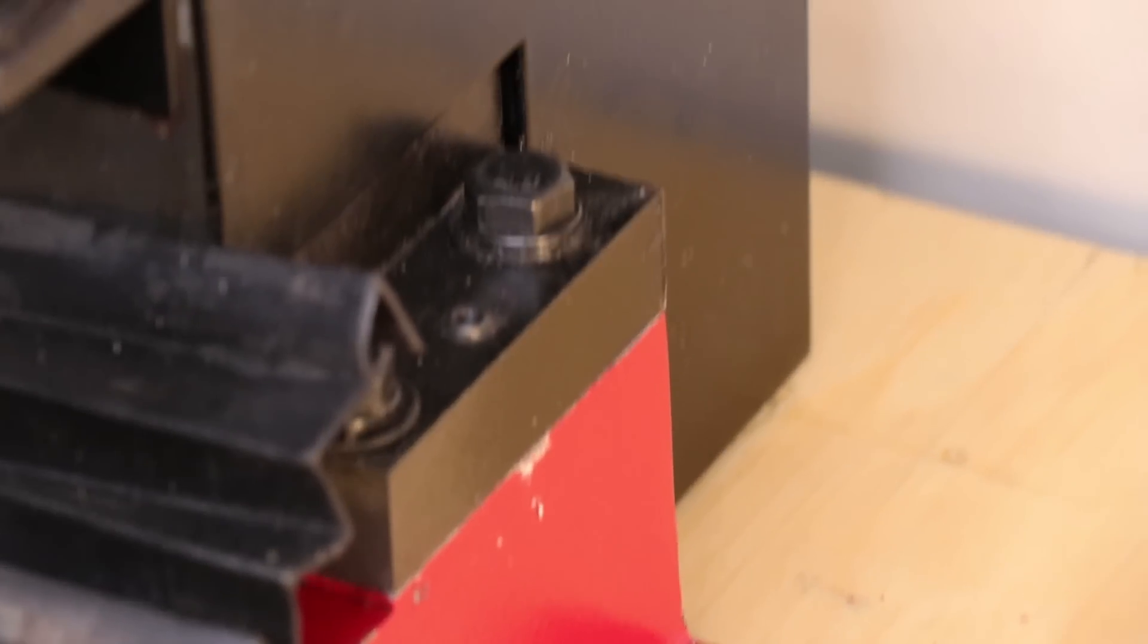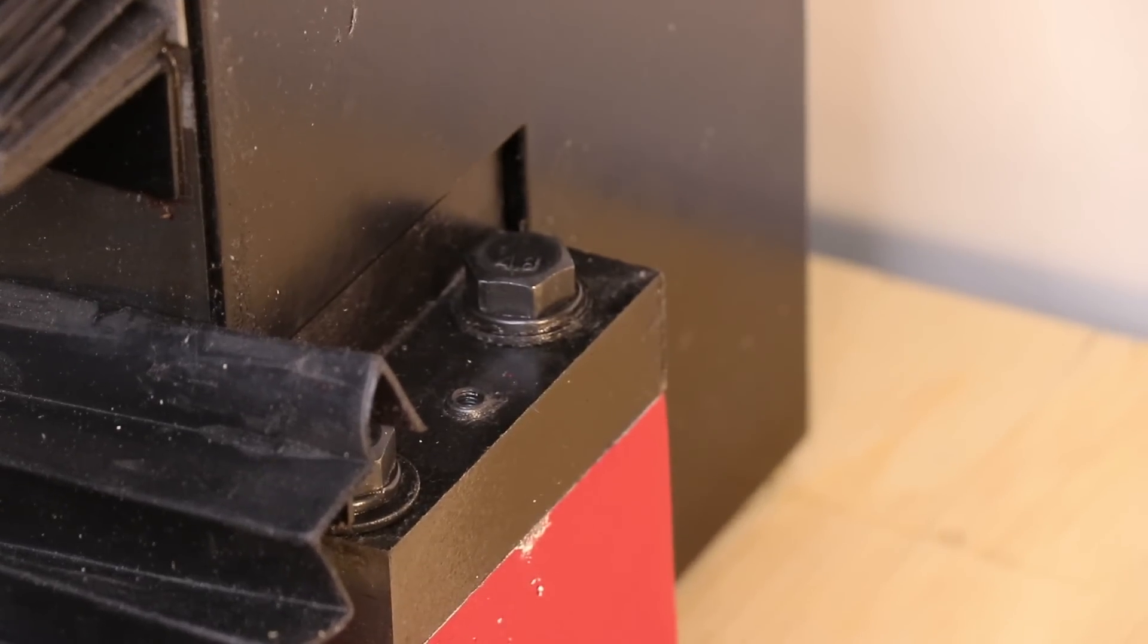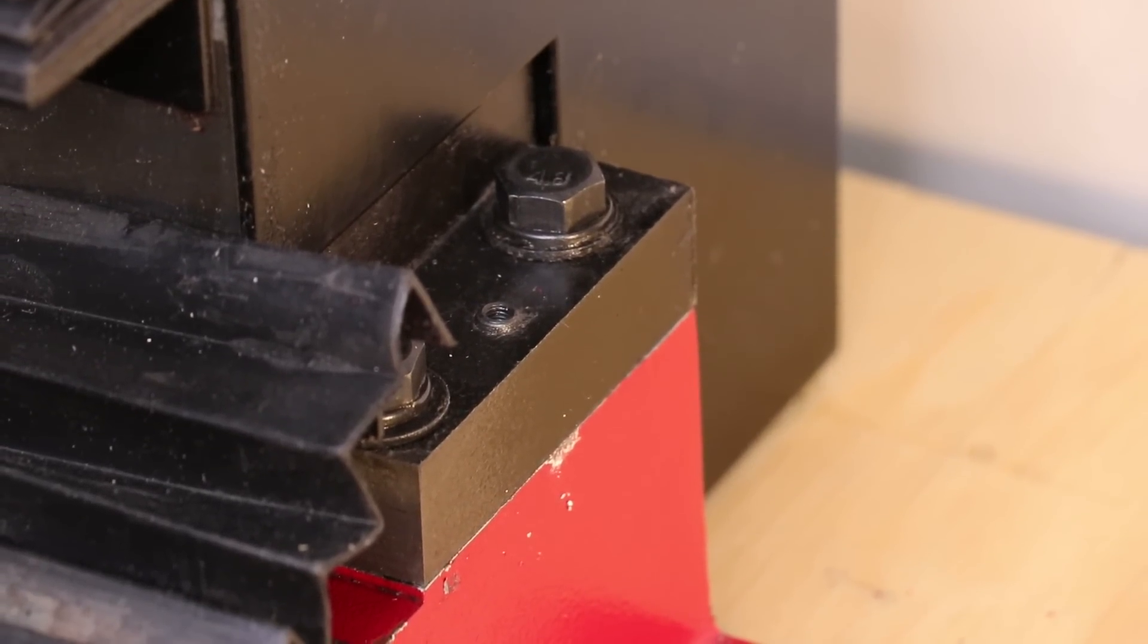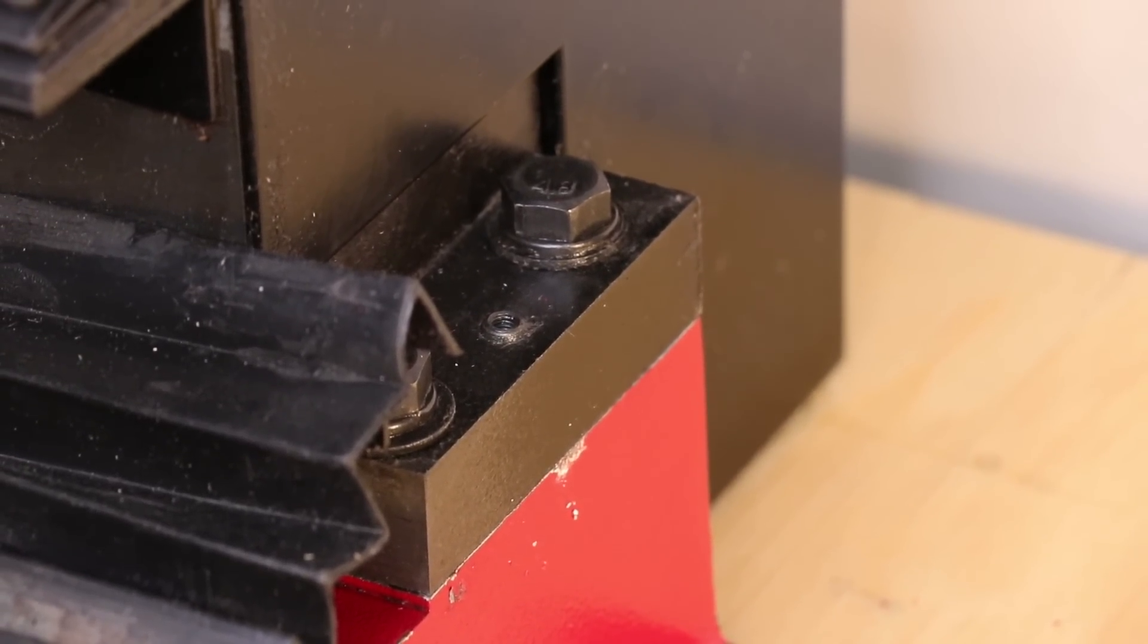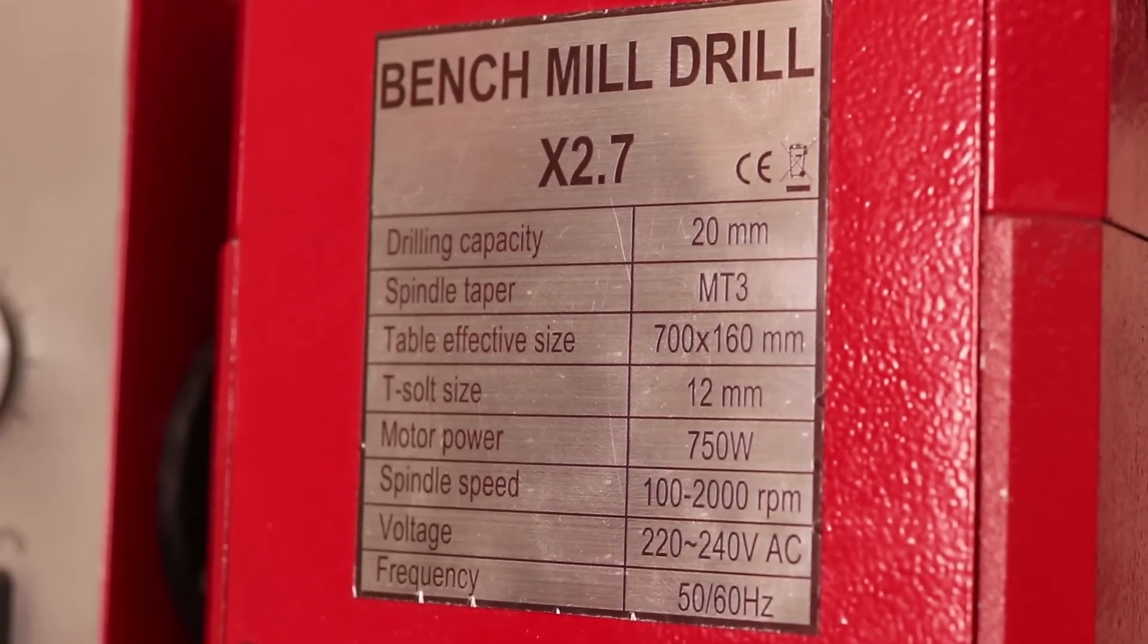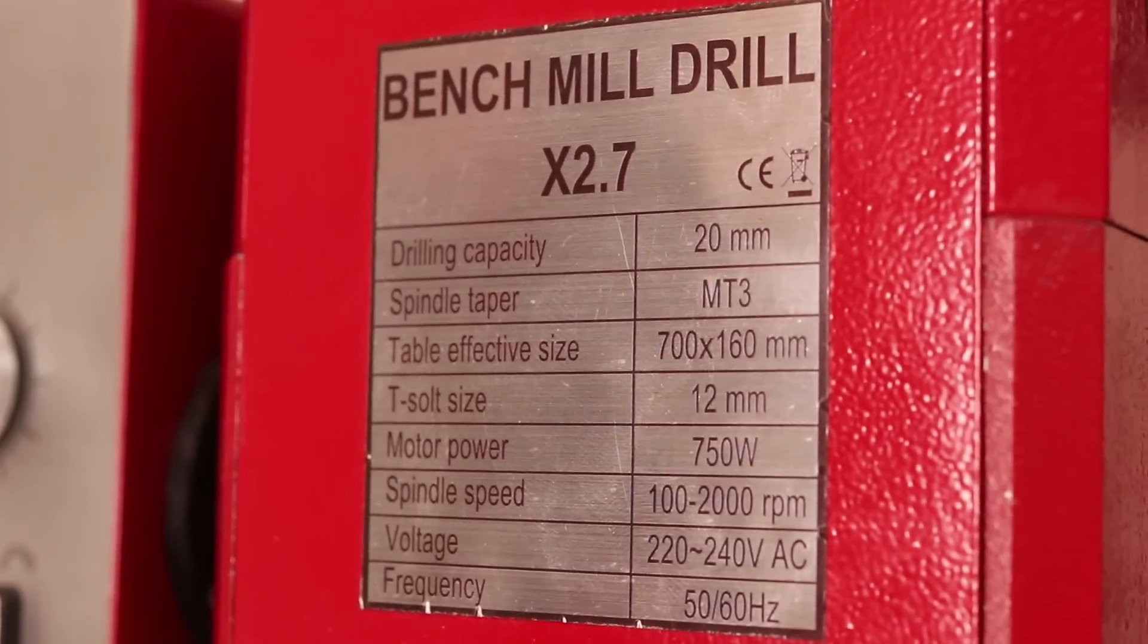The 2.7, however, has a solid column design, which is bolted to the bed using four bolts. This offers a lot more rigidity, and it's much easier to tram in. Finally, this mill has a much bigger motor. It's 750 watts versus 350 watts.